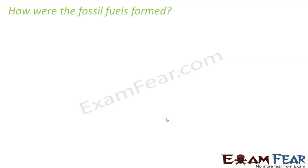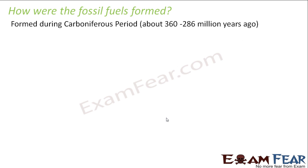So how are fossil fuels formed? They were formed during the Carboniferous period, which was a period long, long back — some 360 million years ago, around the time when dinosaurs existed. It was called the Carboniferous period because of the presence of carbon. The main constituent of coal is carbon.